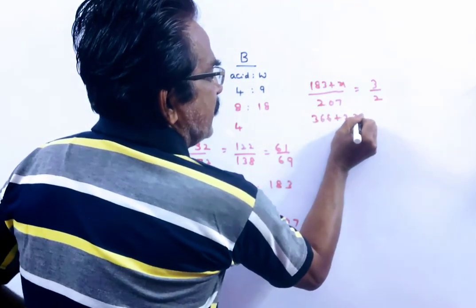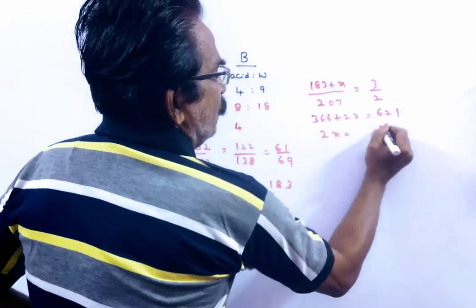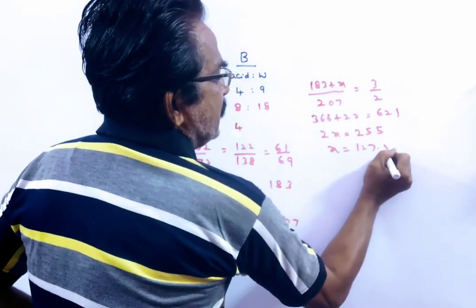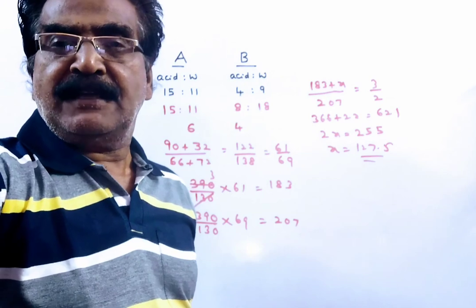366 plus 2x is equal to 621. 2x is equal to 552. x is equal to 127.5 ml. x is 127.5 ml.